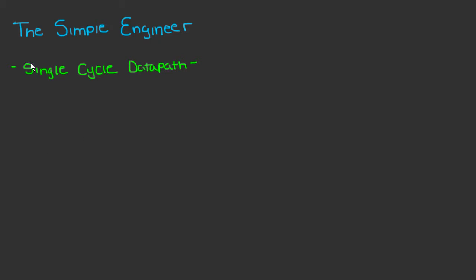Just hearing that definition, you're probably realizing it's a pretty inefficient way of carrying out a CPU system, and the reason is because it's so slow. However, the advantage is that it's a very simple implementation. We're going to look at all the different stages that a single cycle datapath goes through — there are five stages, and the first is the Instruction Fetch stage.